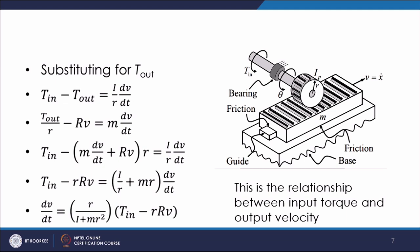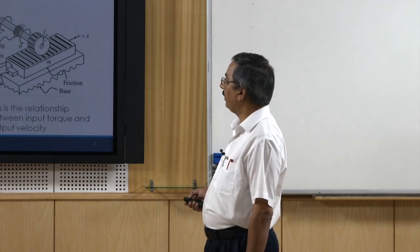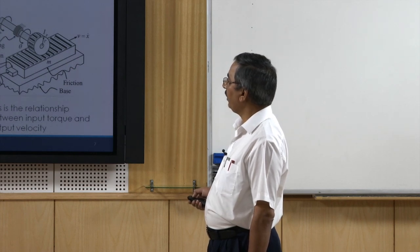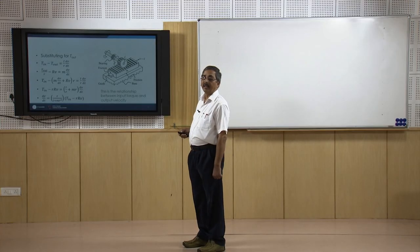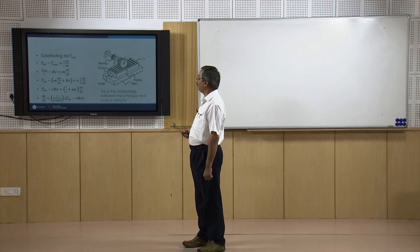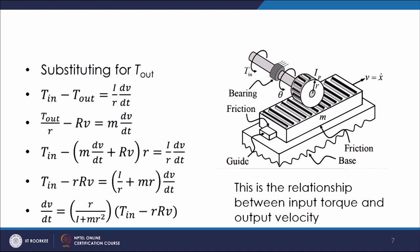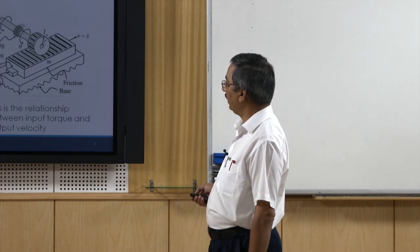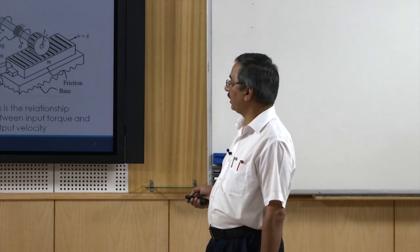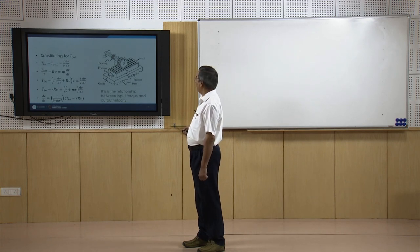Simplifying further, T_in minus R*r*V equals dV/dt times (I/r + m*r). Solving for dV/dt: dV/dt equals (T_in minus R*r*V) times r divided by (I plus m*r²). This is the system equation for the rack and pinion arrangement — a first-order differential equation relating input T_in to output velocity V.